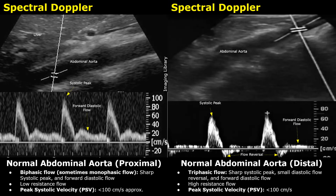The distal aorta has higher resistance than the proximal aorta due to its supply to higher resistance vascular beds, such as skeletal muscles, pelvic organs, and lower extremities. The resistance increases due to small-sized arteries and arterial branching, which reduces flow efficiency.